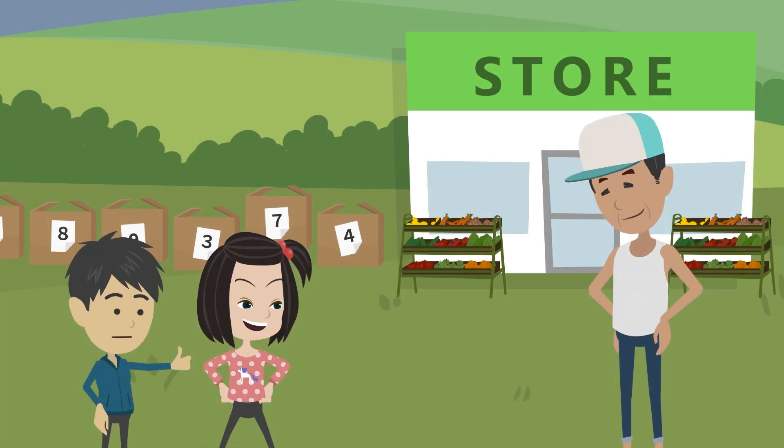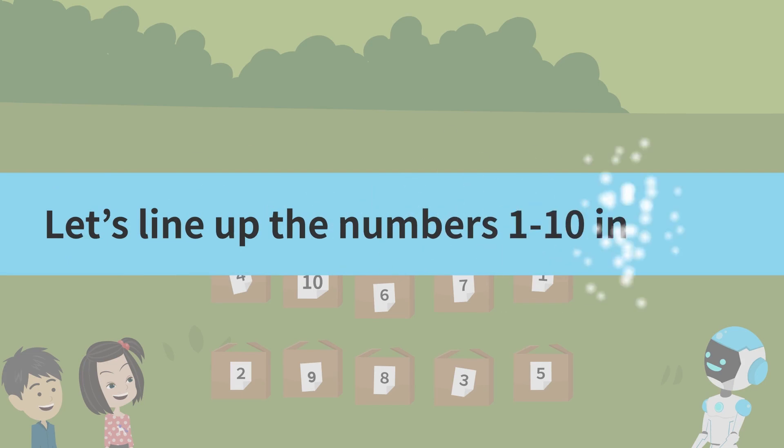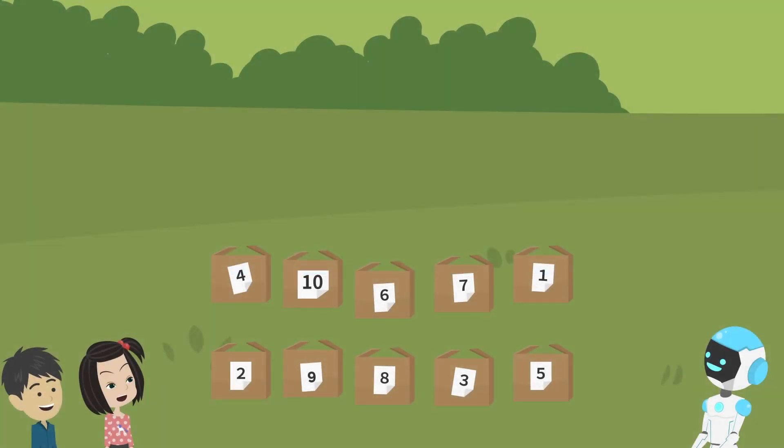Now we have carried all the boxes. Thanks, that's a big help. Now, I have one more thing I need you to do. I want you to line up these boxes in order of the numbers. Okay, we'll try. Let's put them in order, starting with the boxes with the smallest numbers here. Let's think about it together.